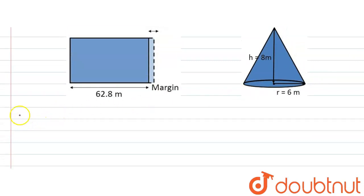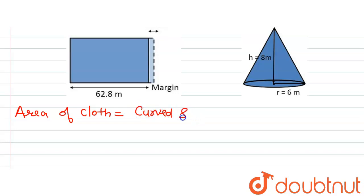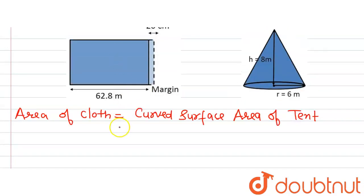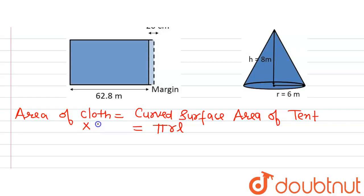The area of cloth required equals the curved surface area of the tent. The curved surface area of a cone is π r l, where r is the radius and l is the slant height. The cloth is in the form of a rectangle, and we are given the width. So area of rectangle equals length times breadth: x multiplied by b equals π r l. We know the value of radius but not the slant height, so let's find it.